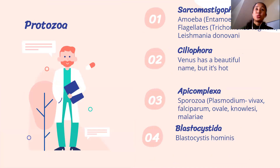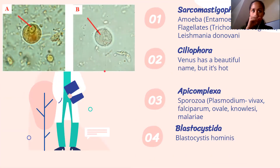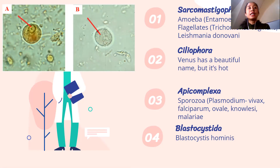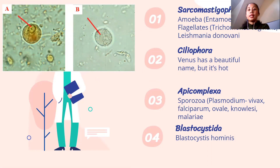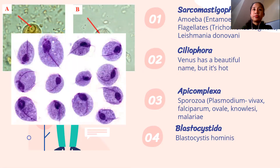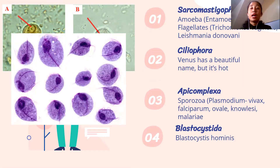Under protozoa, sarcomastigophora includes your amoeba. This is Entamoeba histolytica, the causative agent for amoebiasis, shown here in its cyst form. Your protozoa have different morphological forms — cyst and trophozoite. We also have flagellates.